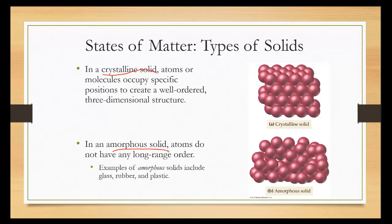Whereas in an amorphous solid, atoms do not have any long-range order. For example, glass, rubber, or plastic.